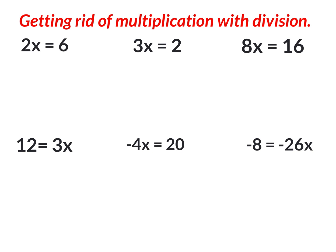More importantly I want you to understand how to get rid of this multiplication of two in front of the x — by doing the inverse of it, which is division. The inverse operation of multiplication is division, so we're going to be getting rid of multiplication with division on all six questions. So what does the first one really say? It says two times x equals six. To get rid of this multiplication I need to do the inverse, which is division, and I'll use the fraction bar.